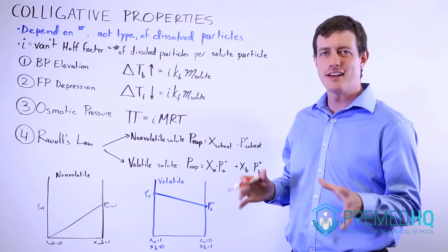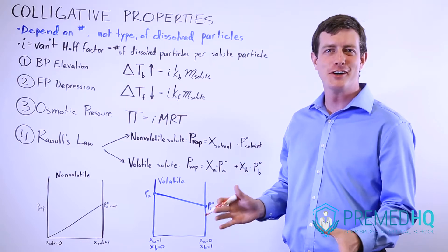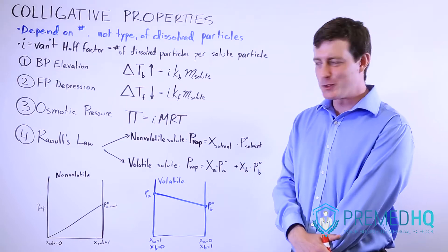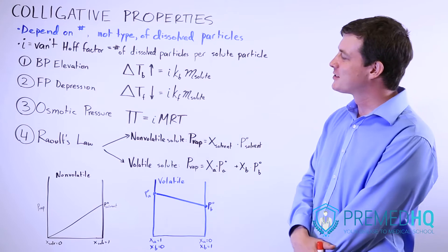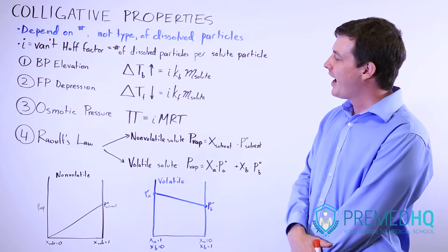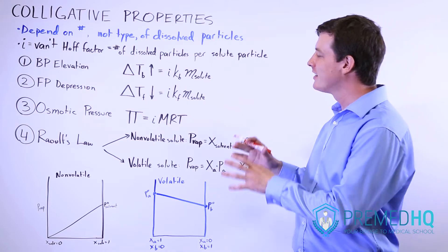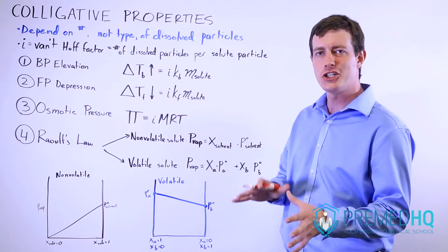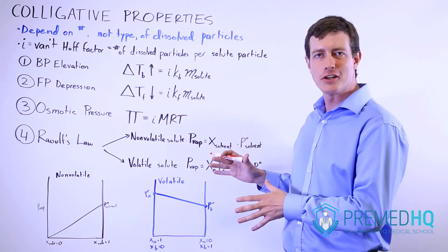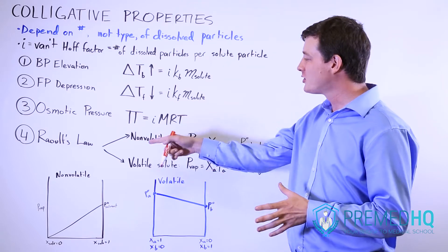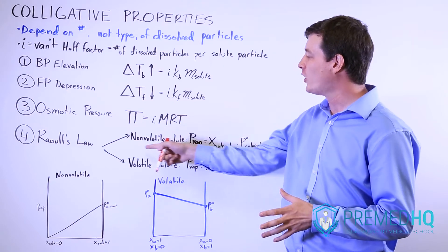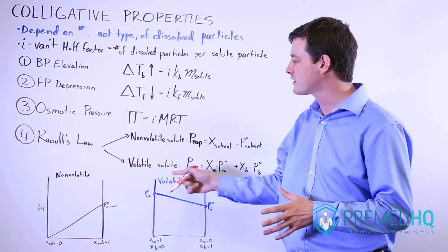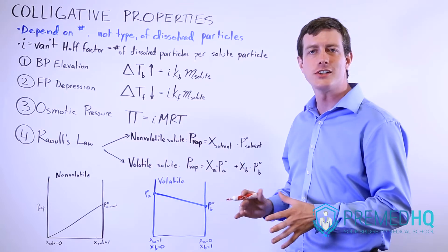Raoult's Law was developed by a French chemist named François-Marie Raoult, and what it does is explain how adding a solute to a solution can change the vapor pressure. There are two forms of it: one involves a non-volatile solute and the other involves a volatile solute.